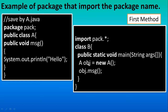The object you are creating is the object of class A — it means from this program you want to access the content from that class. If you create the object, you can access the method, but this method is not present in this program, it is present in class A. That's why we create the object of A and then access the method using import pack.*